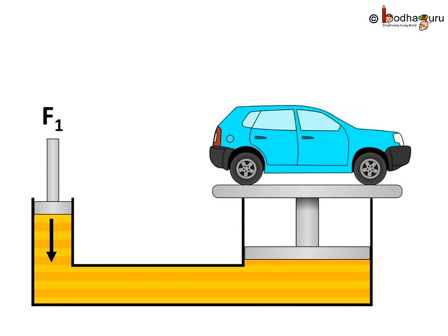Now, when we apply force which is equal to F1 to left piston, then it will create pressure which is equal to F1 divided by A1. As we know, pressure is equal to force by area.